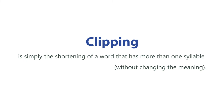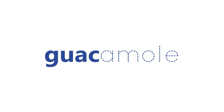Clipping is simply shortening of a word that has more than one syllable without changing the meaning. You might say, if the meaning is not changed, why do you call it a word formation process? Because you don't create a new word, you just shorten a word. For example, the word 'guac' — what is it short for? Yes, guacamole. So guacamole has been shortened to guac. So how is it that a word has been created? Did we really create a new word or did we just shorten the word?